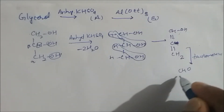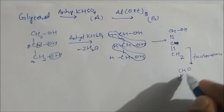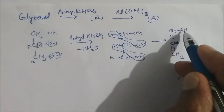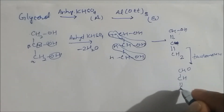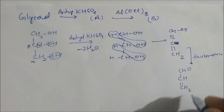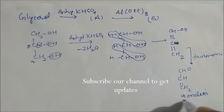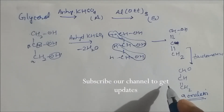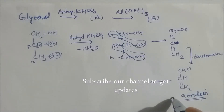After tautomerization, this becomes CHO, and next becomes CHO; hydrogen shifts to give CH, and this becomes CH₂. This compound is called acrolein — our favorite compound. This acrolein is product A.